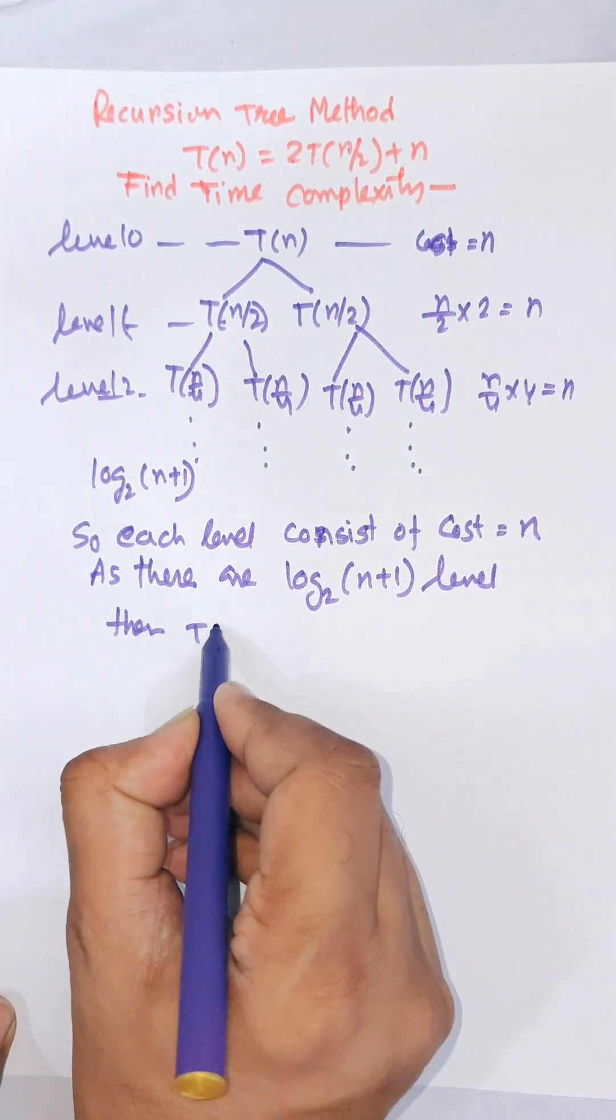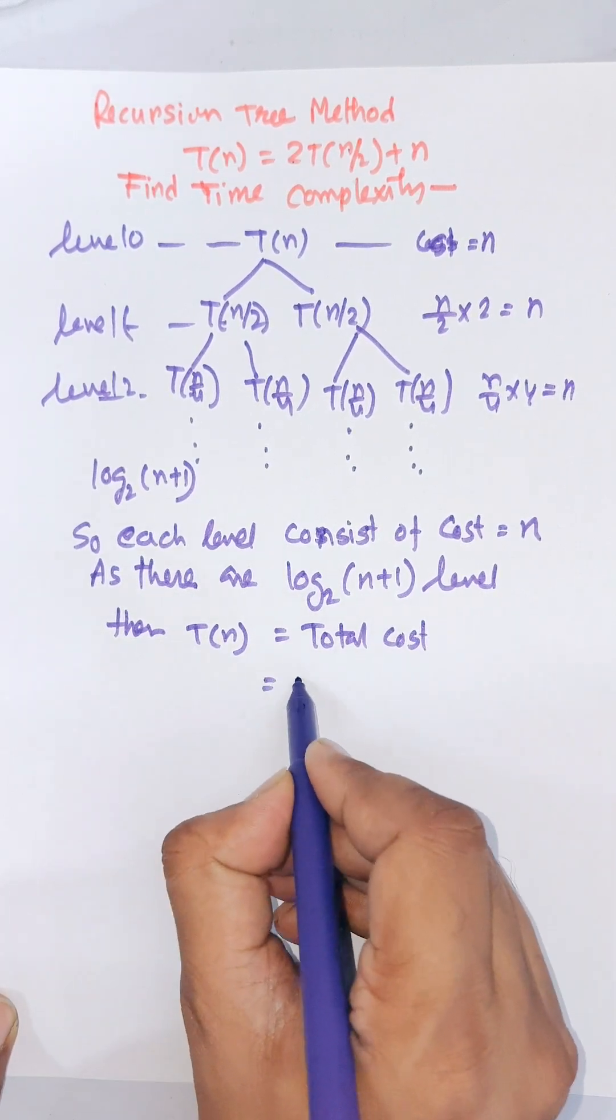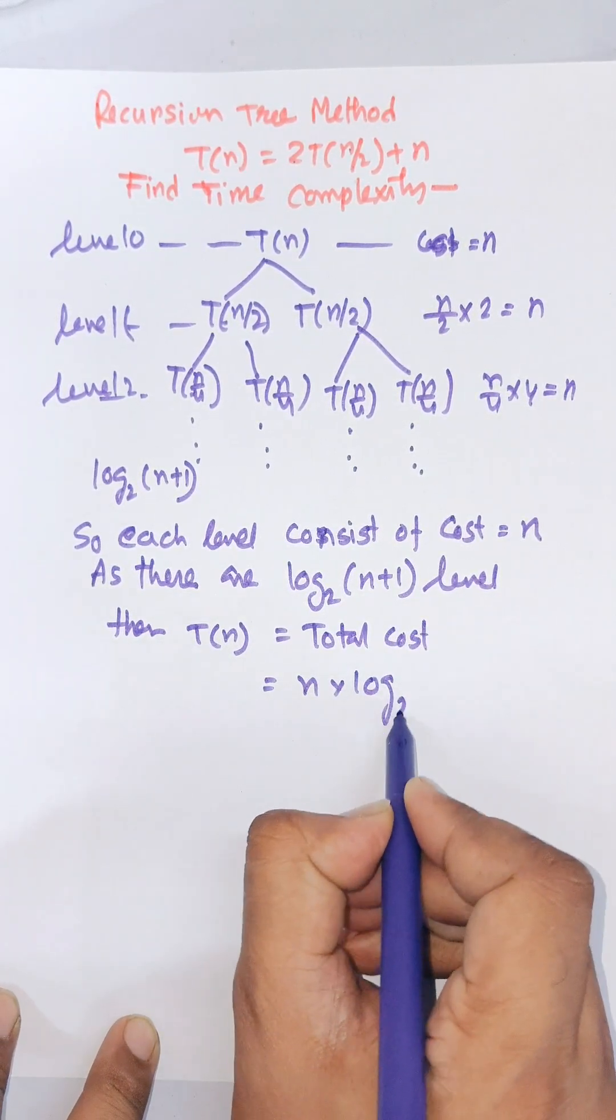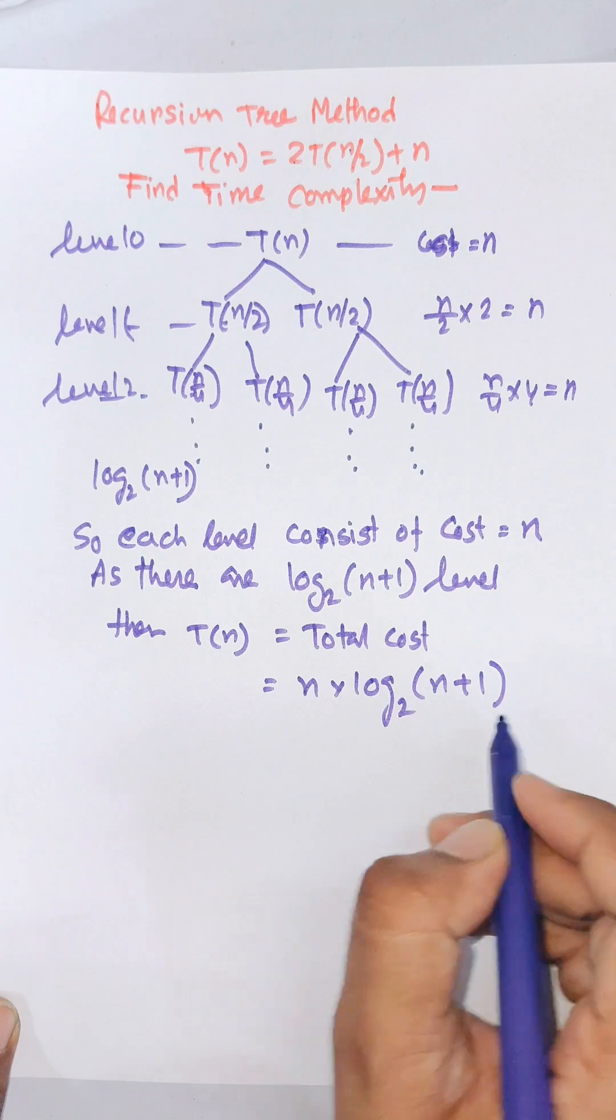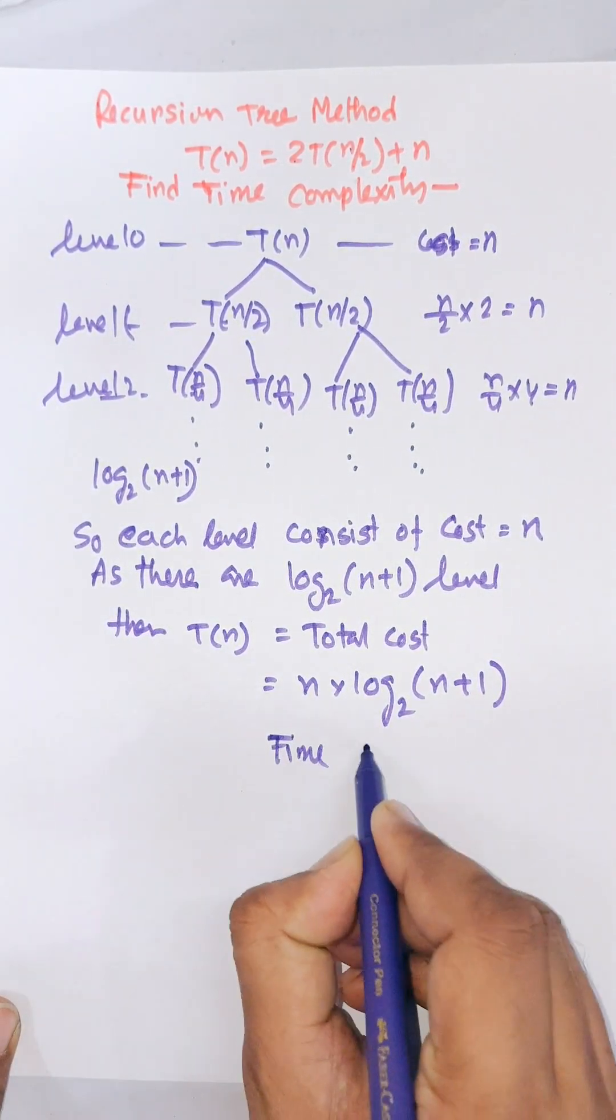Then T(n), that is total cost. We need to find the total cost. Total cost equals n into log₂(n) plus 1, and time complexity is O(n log₂(n)).